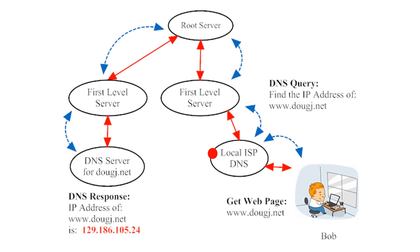Sometimes, the local server already knows the answer and so it can simply answer the question right away. However, the local DNS server may not know the answer, and in that case, the request gets sent further up the server tree to a higher-level DNS server, and the question gets repeated. If the question isn't answered, it gets sent even further up the tree to a root server.